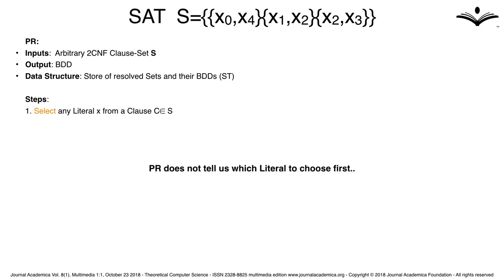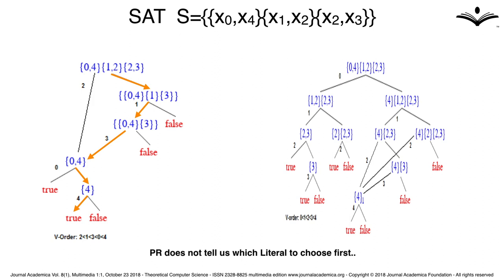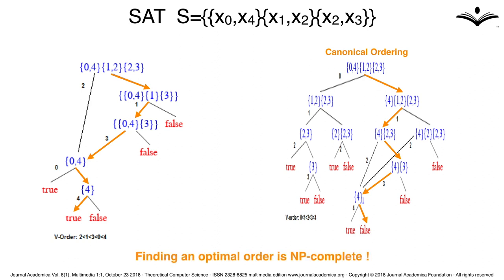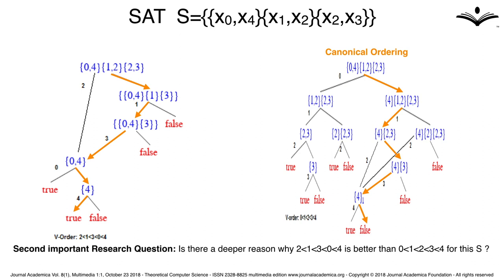PR does not tell us which literal to choose first — that is left for the implementation. Following variable order 2, 1, 3, 0, 4 produces 5 blue nodes, while following the canonical order 0, 1, 2, 3, 4 produces 10 blue nodes. How do we find the best order? Is there any way to do that? Finding an optimal order is actually NP-complete. The second important research question is: is there a deeper reason why the order 2, 1, 3, 0, 4 is better than 0, 1, 2, 3, 4 for this formula S?